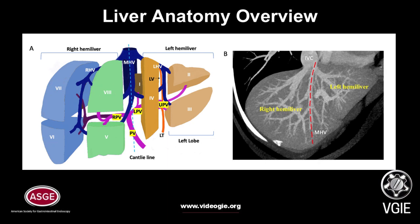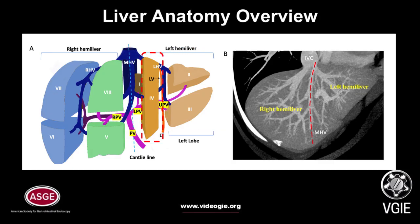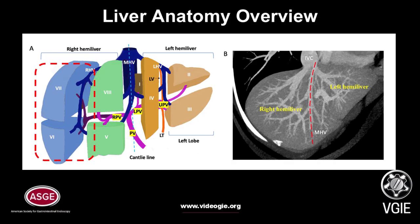The left anatomical liver is further classified into the left lateral sector — segments 2 and 3 — and the left medial segment 4, divided by the left hepatic vein. The right anatomical liver is further classified into the right anterior sector — segments 5 and 8 — and the right posterior sector — segments 6 and 7 — divided by the right hepatic vein.